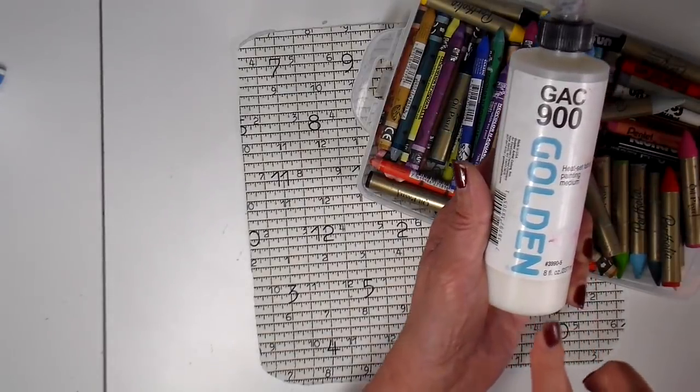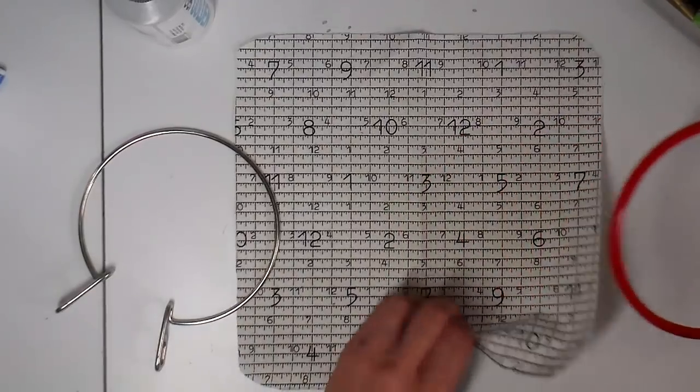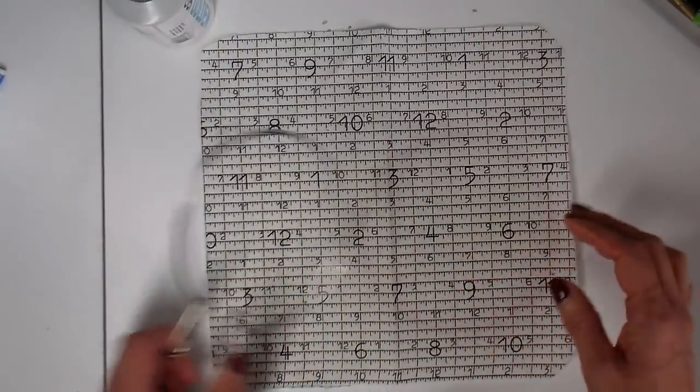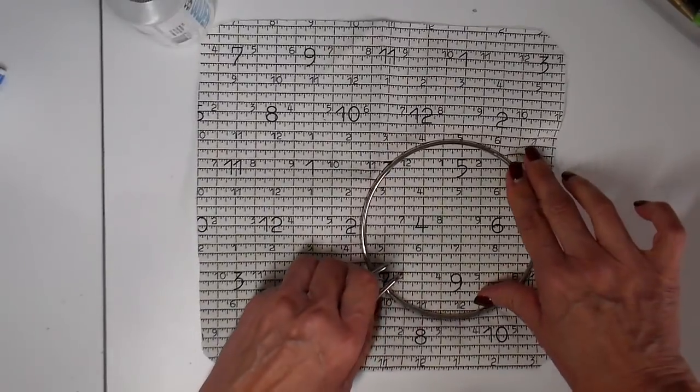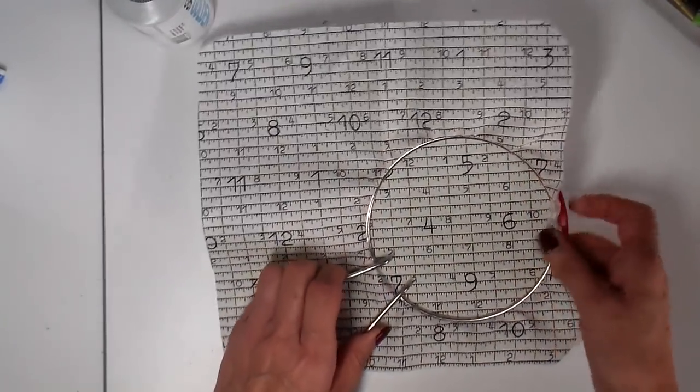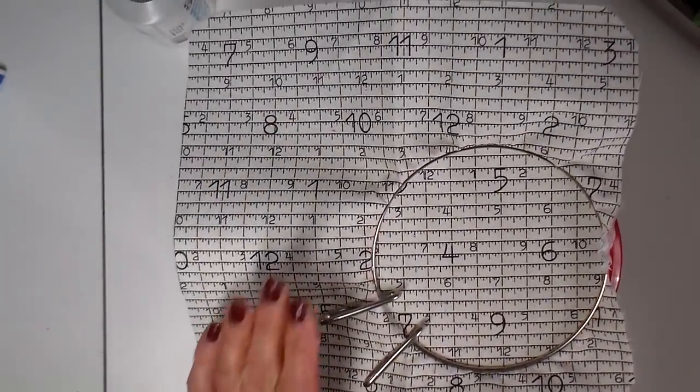I'm going to be activating with the GAC 900 by Golden, the fabric medium. I will be using a hoop at my sewing machine to keep this taut and more stable when I'm doing my free motion. This is a tension hoop that I've had for a number of years. I really like it for a lot of reasons.